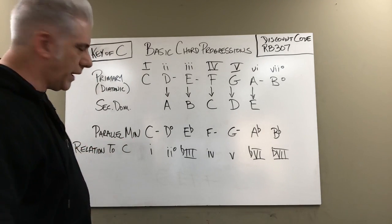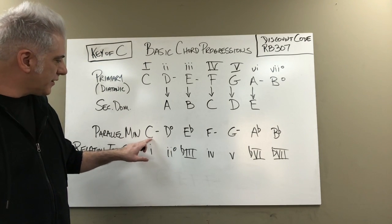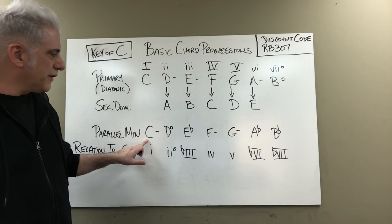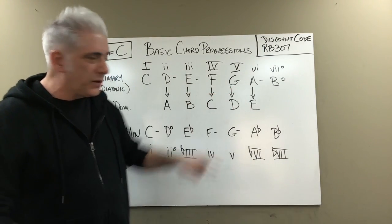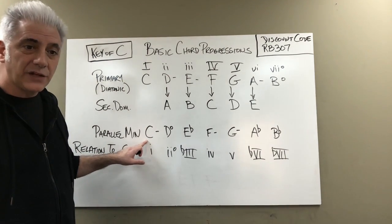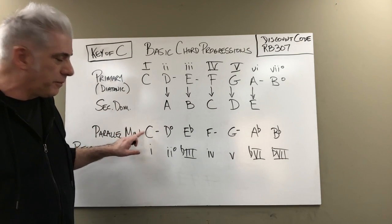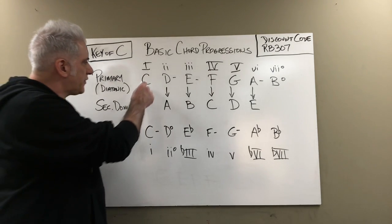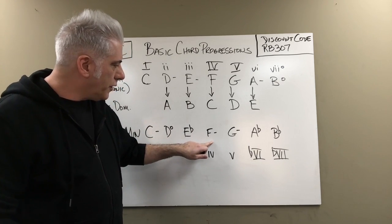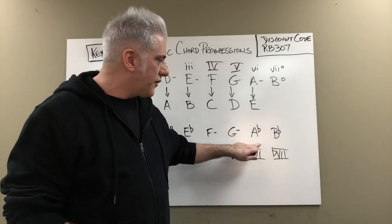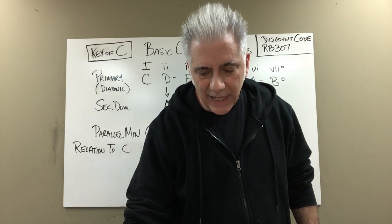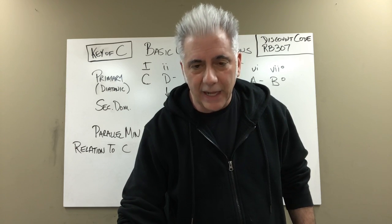First I want to talk about the parallel minor. The parallel minor is like the relative minor, but it's built on the tonic — that's why it's called 'parallel.' The relative minor would be A minor, which is built on the sixth chord. The parallel minor is built on a natural minor (Aeolian) scale, but off the tonic. So C major's parallel minor is C minor. The chords of C minor: one chord is C minor, two is D diminished, three is E-flat major, four is F minor, five is G minor, six is A-flat major, seven is B-flat major.